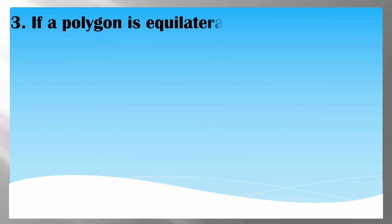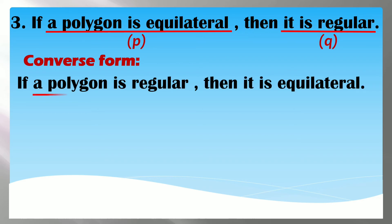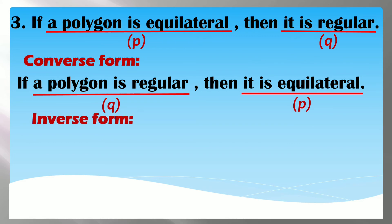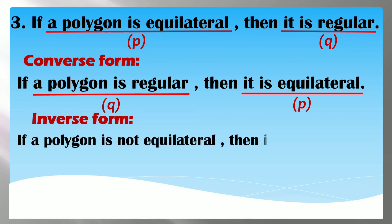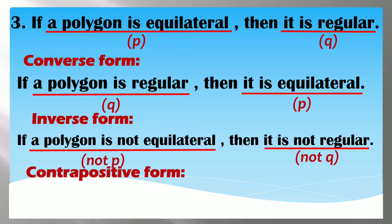Number 3: if a polygon is equilateral, then it is regular. Ito yung ating P, ito yung ating Q. Converse — pagbabaliktarin natin silang dalawa: if a polygon is regular, then it is equilateral — una si Q, then si P. Pag inverse naman, lagyan lang natin ng 'not' yung ating if-then: if a polygon is not equilateral, then it is not regular — not P, not Q.